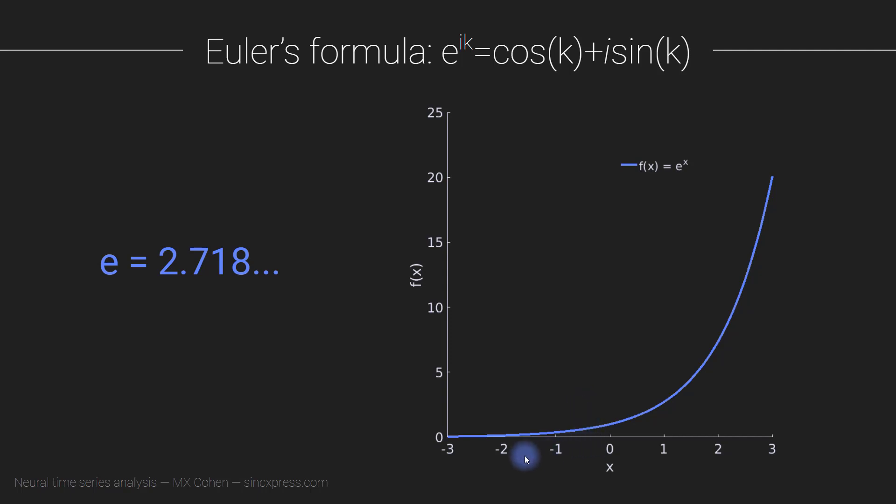It gets arbitrarily close to zero, but it never actually gets to zero, and it never becomes negative. So e to the x is a strictly positive function. You can see when x gets really large and negative, so when you go off to the left, this function gets really, really tiny.